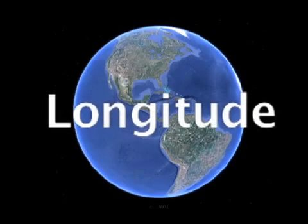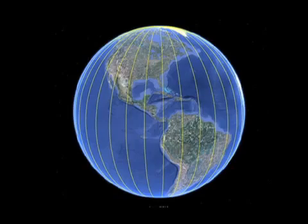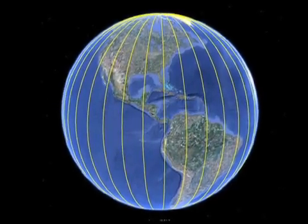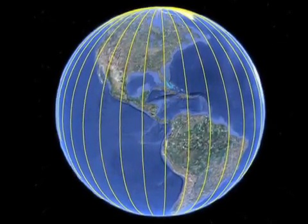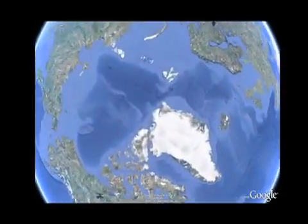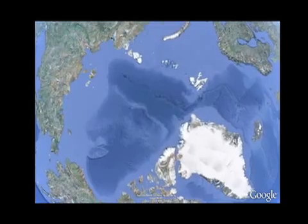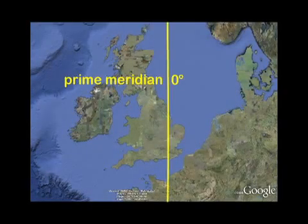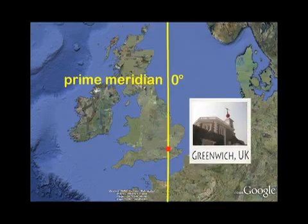Longitude. The lines that run north and south are called meridians of longitude. These lines are measured the same way as parallels of latitude, using degrees, minutes, and seconds. However, unlike latitude, lines of longitude are not equidistant from each other — meridians intersect at the north and south poles. Zero degrees longitude is called the prime meridian, and it passes through the Royal Greenwich Observatory in Greenwich, England.